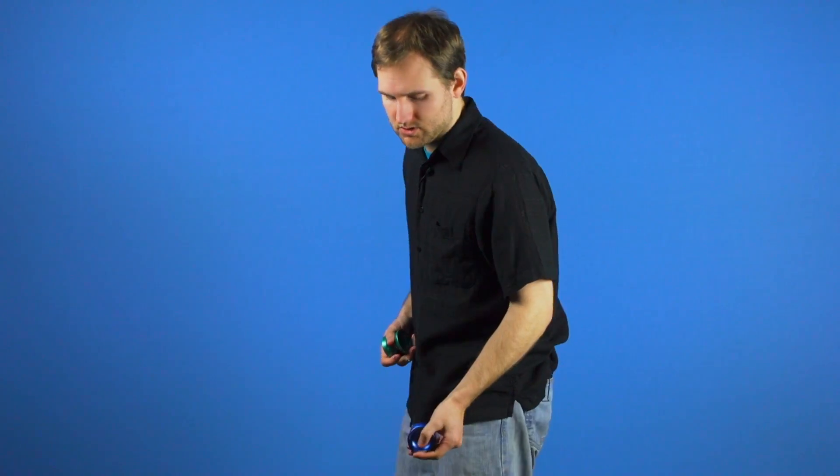From there, we're going to do essentially the same thing with the left hand. Go from a Gunslinger mount, throw the yoyo around the wrist, and land in the trapeze and his brother. But there are a few tricky parts with it, so I'll show you how to do that.